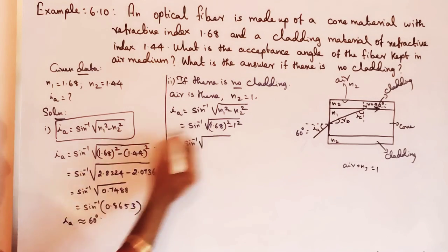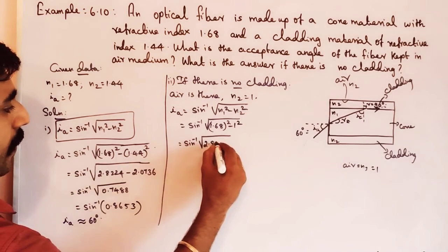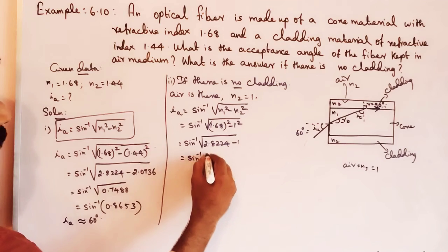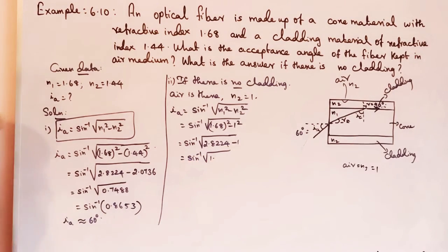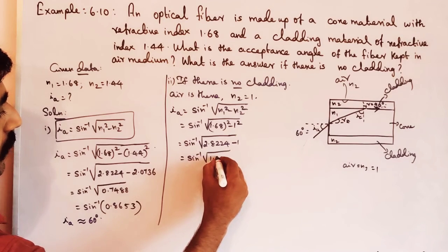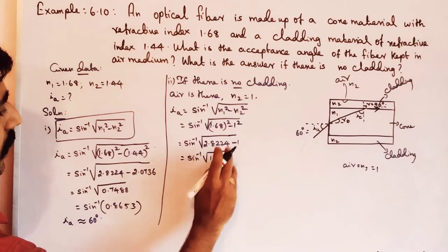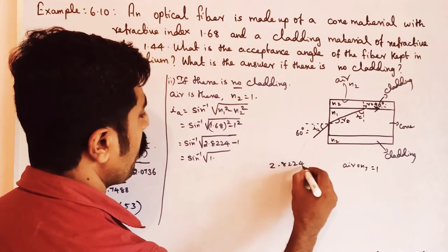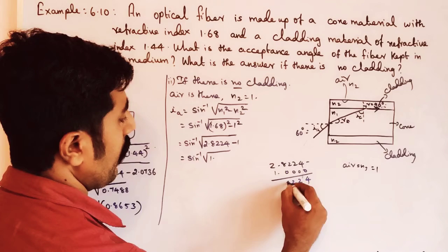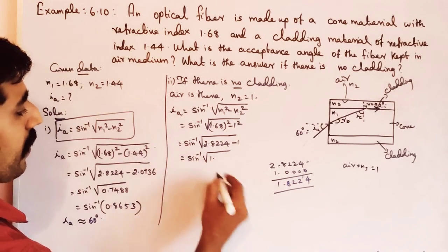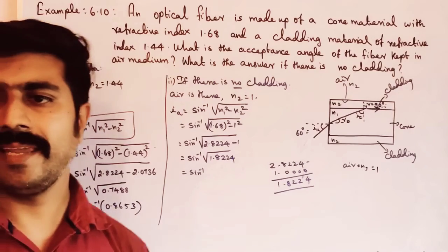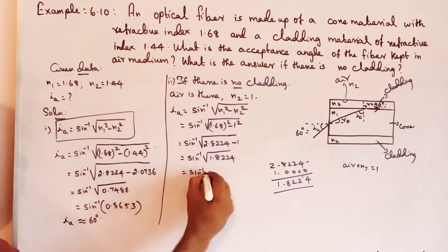IA equals sin inverse of square root of (1.68 squared minus 1 squared), which equals sin inverse of square root of (2.8224 minus 1), which equals sin inverse of square root of 1.8224. The square root of 1.8224 is approximately 1.35.